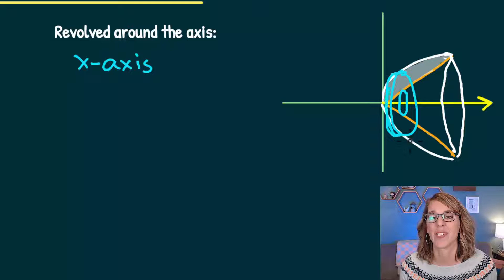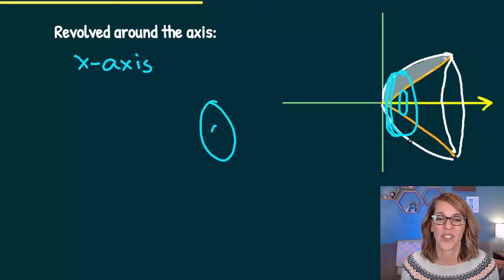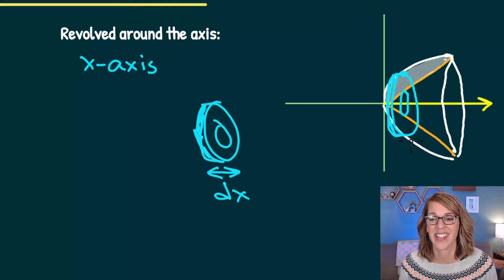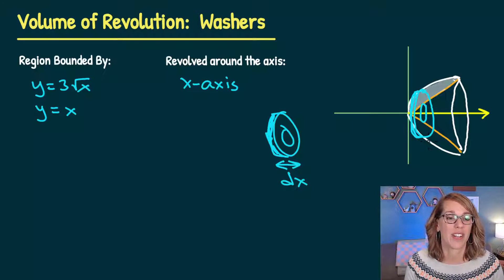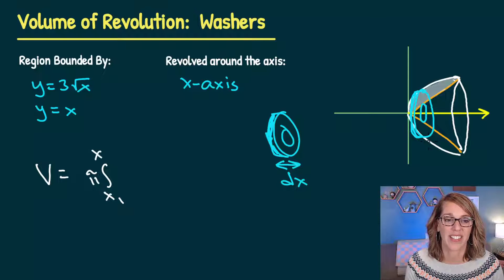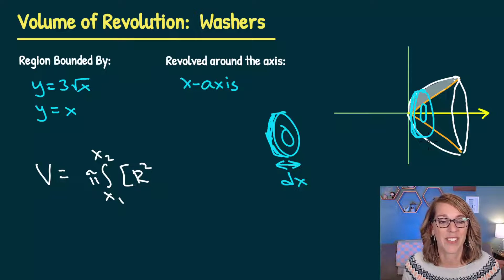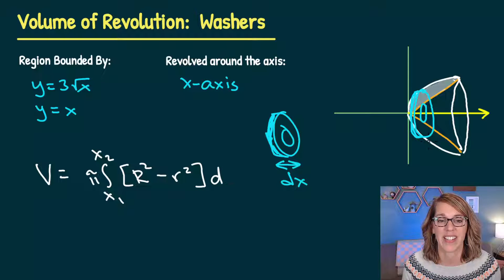Let me draw the washer over here so you can get a better view. My washer is open in the middle, and for this particular rotation the thickness is in the x direction — that's going to be a dx. That means all of my variables of integration are going to be in x. So the volume formula is: from x1 to x2, pi times the outer radius squared minus the inner radius squared, all times dx.